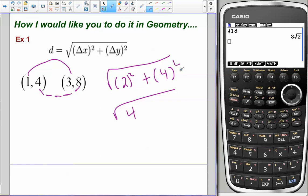Well, 2 squared is 4, 4 squared is 16. So I got radical 20. And we know that 4 times 5 is 20. So radical 4 is 2, so 2 radical 5.